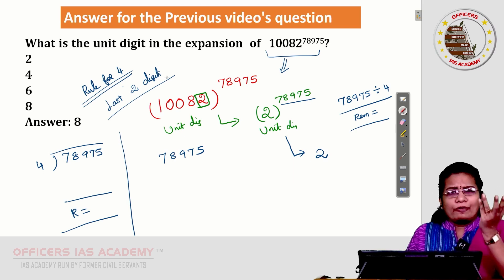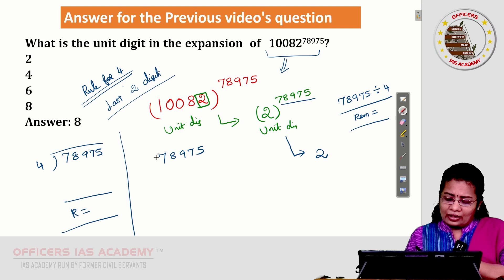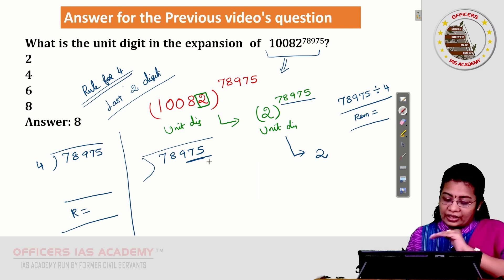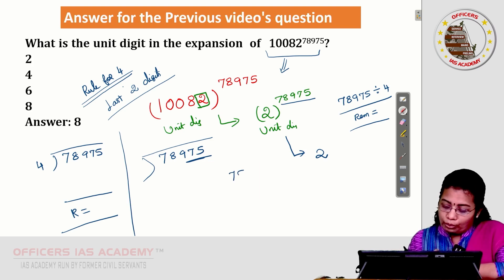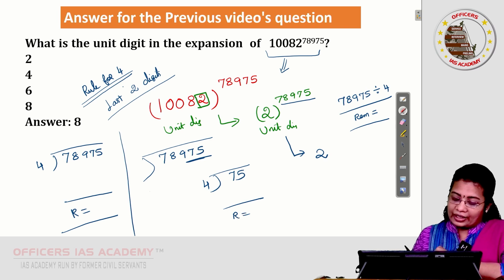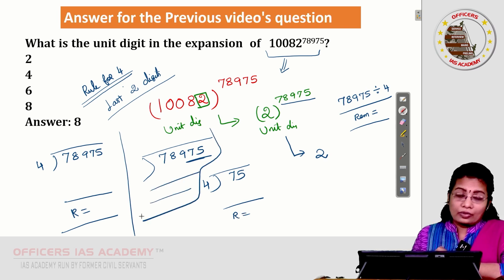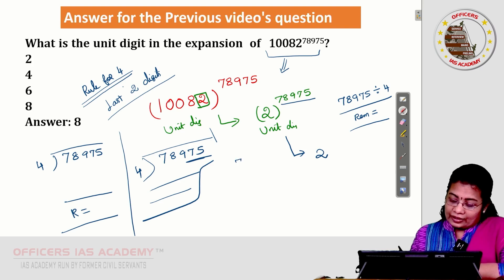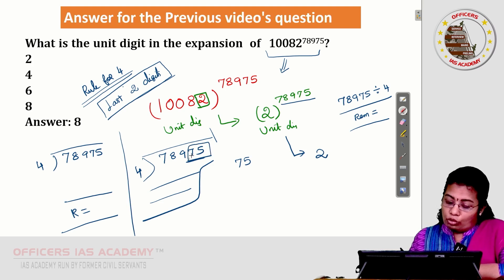Whether the number is divisible by 4 or not, you can check with the last 2 digits. That is enough. No need to waste your time and energy with solving a lengthy number. Last 2 digits are 75. I am going to consider this 75 to be divided by 4. What is the remainder? The same remainder I will get in this case also.